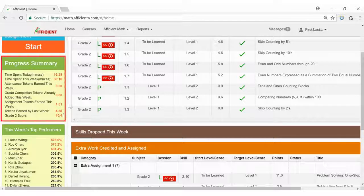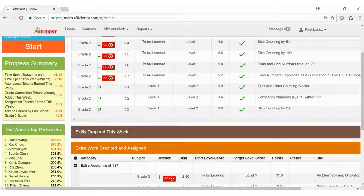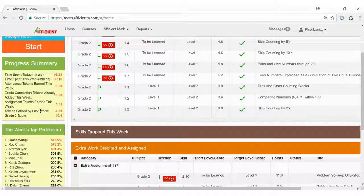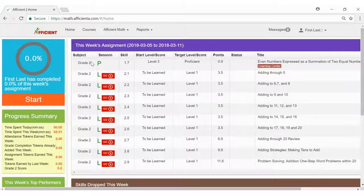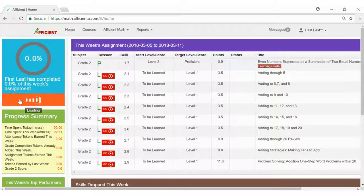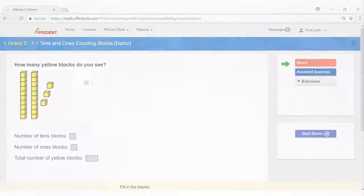In your progress summary, you can see your time spent, tokens, and overall score for the grade you're working on. Tokens can be redeemed for real prizes. To get started, all you need to do is click start, and our program will automatically guide you through your homework.